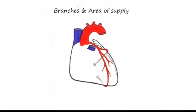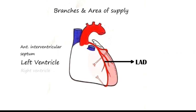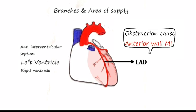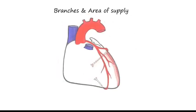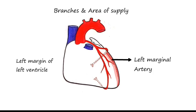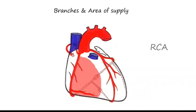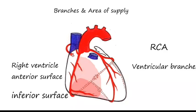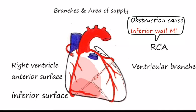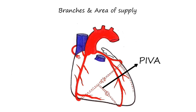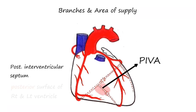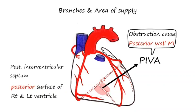The left anterior descending artery supplies the anterior interventricular septum, the left ventricle, and the right ventricle. Since it supplies the majority of the anterior wall, injury to it causes anterior wall MI. The circumflex artery supplies the left auricle and the posterolateral surface of the left ventricle. The left marginal artery supplies the left margin of the left ventricle. The right coronary artery's ventricular branches supply the right ventricle's anterior and inferior surface, and injury causes inferior wall MI. The atrial branches supply the right atrium, and the sino-aortic branch supplies the SA node. The posterior interventricular artery supplies the posterior interventricular septum and the posterior surface of the right and left ventricle; injury may lead to posterior wall MI.